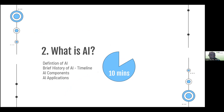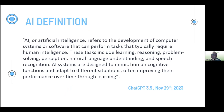Next, we'll define AI and look at its timeline and core components. There are many definitions of AI, but I chose this one — I asked AI to define itself. It said: 'AI, or artificial intelligence, refers to the development of computer systems or software that can perform tasks that typically require human intelligence. These tasks include learning, reasoning, problem solving, perception, natural language understanding and speech recognition.'